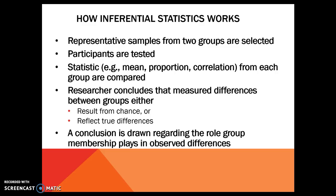Here's how the whole process works. We get two groups representative of whatever we're studying and test them on something — measure their height, give them a customer satisfaction survey, or an actual quiz. We calculate some kind of statistic, probably a mean, and compare them. The researcher concludes whether the differences are a result of chance — meaning both groups were essentially the same — or whether they reflect true differences. Then we draw a conclusion and move on.